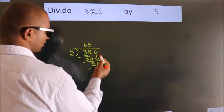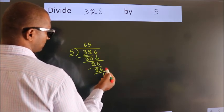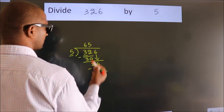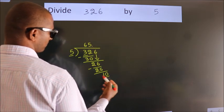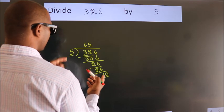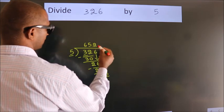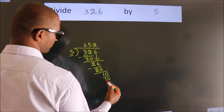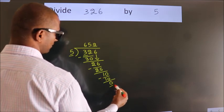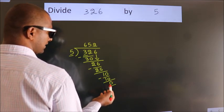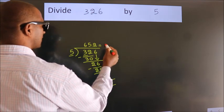After this, no more numbers to bring down. So what we do is put a dot and take 0, making 10. When do we get 10 in the 5 table? 5 times 2 is 10. Now we subtract. We get 0. We got remainder 0. So this is our quotient.